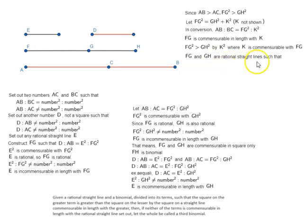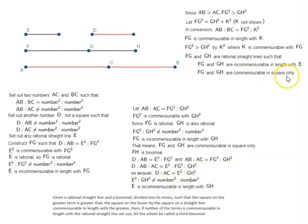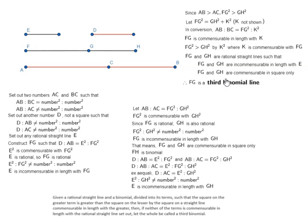FG and GH are rational straight lines, both incommensurable in length with E, and commensurable in square only. Therefore FH is a third binomial line divided into its terms FG and GH. That is proposition number 50 of book 10 of Euclid's Elements.